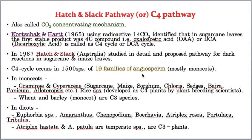In dicots also, Euphorbia species, Amaranthus, Atriplex, and Portulaca show the C4 pathway. Interestingly, Atriplex rosea shows C4 pathway, whereas Atriplex hastata and Atriplex patula, belonging to the same genus, are C3 plants — a surprising and tricky point.